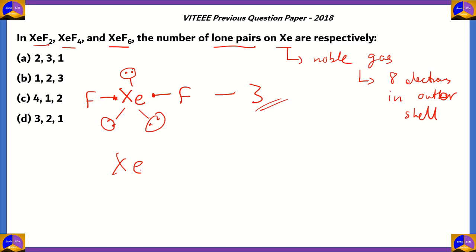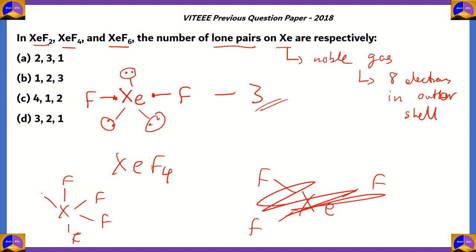Similarly, if you were talking about XeF₄, you will be having xenon and then four fluorine atoms. Actually, the structure is something like this: F, F, F, F, and you have four electrons which are left out. They form two lone pairs. Therefore, XeF₄ obtains this structure, so it has two lone pairs.